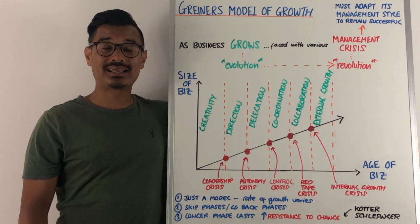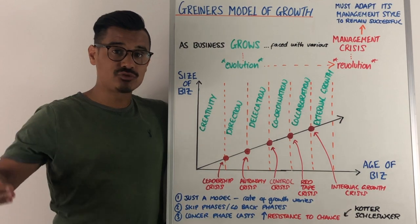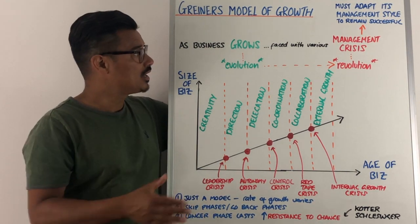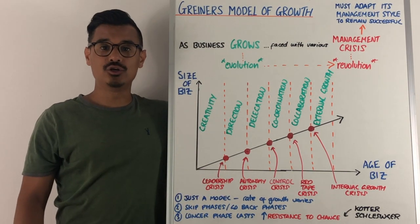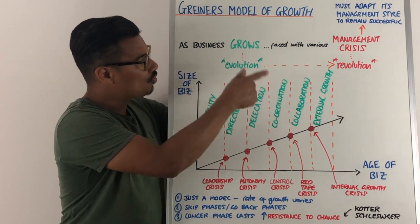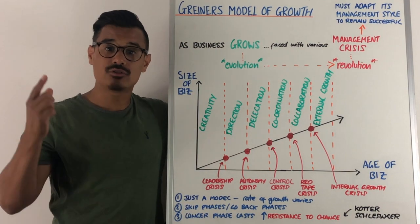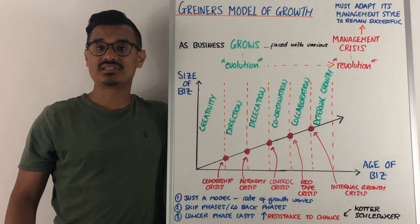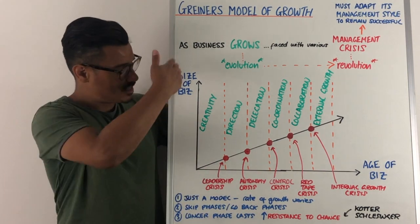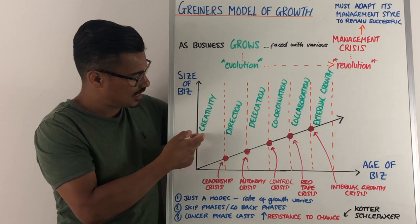Greiner's model of growth was developed by Larry Greiner, who proposed that as a business grows, it faces various management crises where the management style must be adapted for the business to remain successful. Growth is referred to as evolution, and there are six evolutionary phases. Along the way, at the end of each evolution, the business faces a revolution in management style. The model's axes represent the size and age of the business.